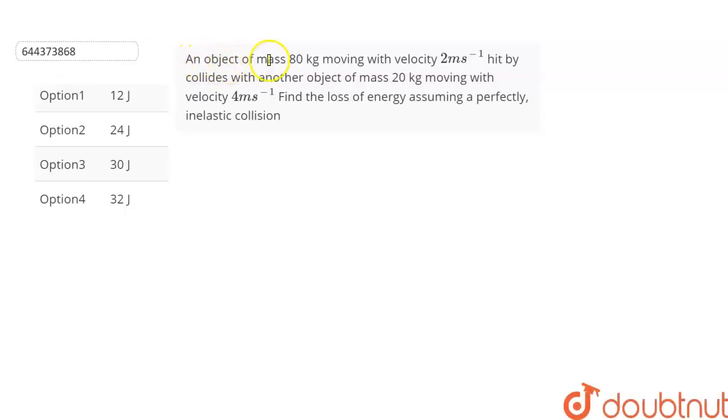The question is: an object of mass 80 kg moving with a velocity of 2 meters per second is hit by another object of mass 20 kg moving with a velocity of 4 meters per second. We have to find the loss of energy assuming that it is a perfectly inelastic collision, and we are given four options from which we have to choose the correct option.